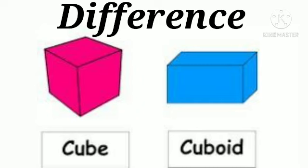Children, now let's explore what is the difference between cube and cuboid. Cube and cuboid, both 3D shapes, have 6 faces, 12 edges and 8 vertices. Both the shapes have plain surfaces. The difference between these shapes is that all the faces of a cube are square in shape, but all the faces of a cuboid are rectangular in shape.